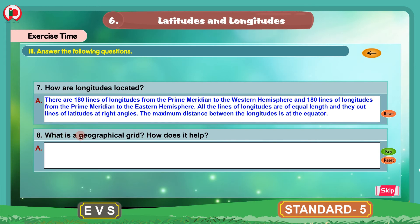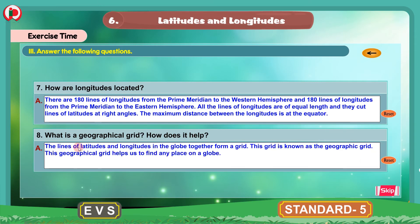Question 8: What is a geographical grid? How does it help? The lines of latitudes and longitudes on the globe together form a grid. This grid is known as the geographic grid. This geographical grid helps us to find any place on a globe. Children, this is about the third bit. You can write these answers in your workbook.